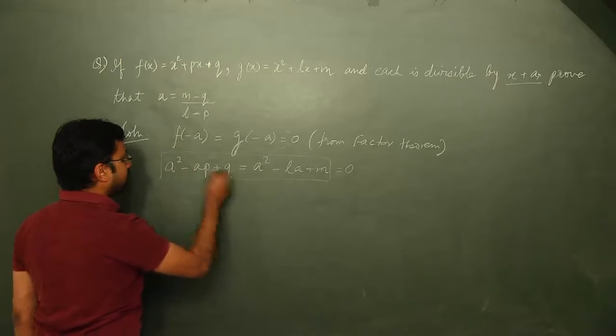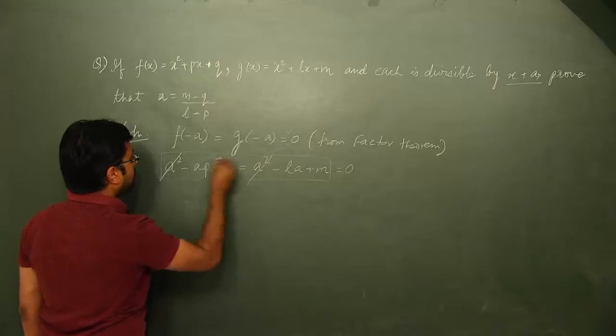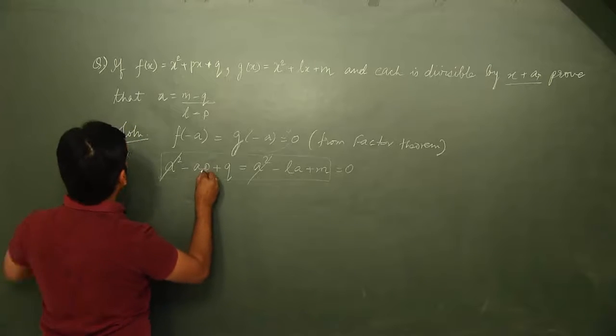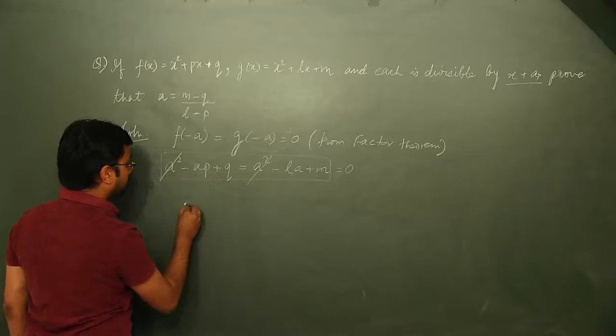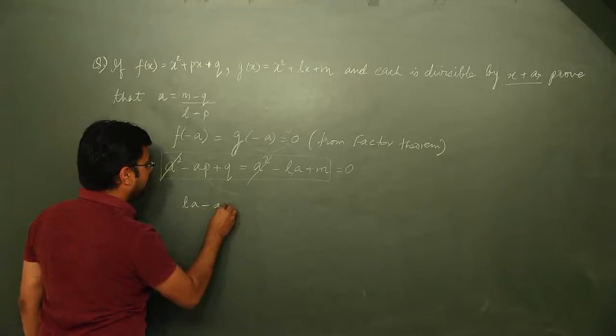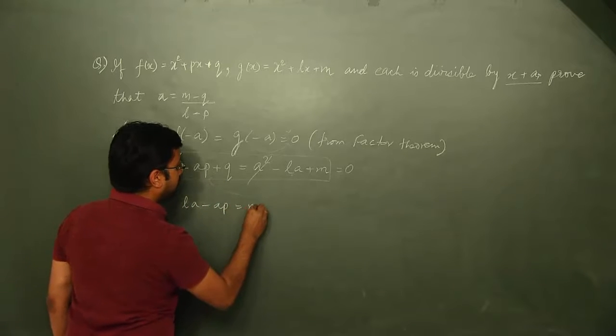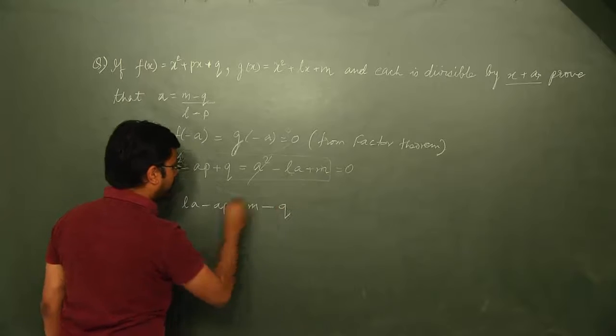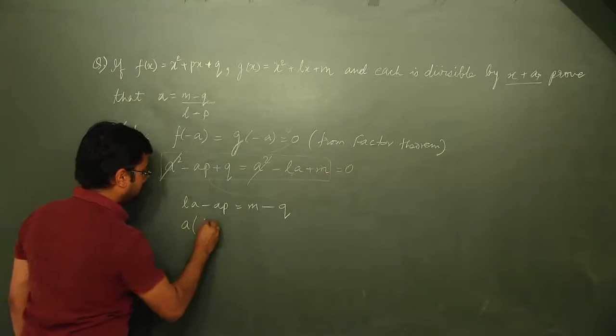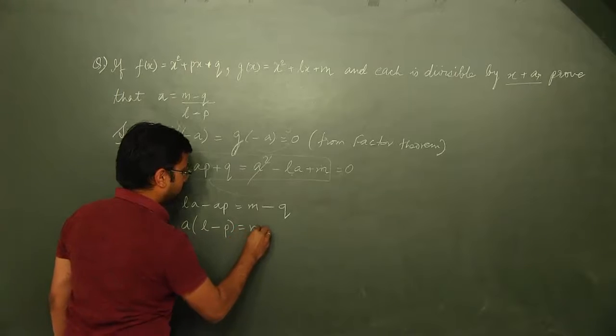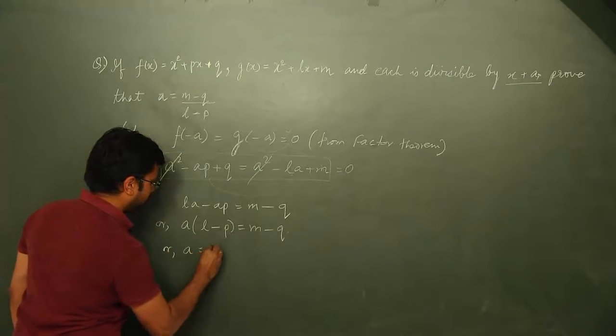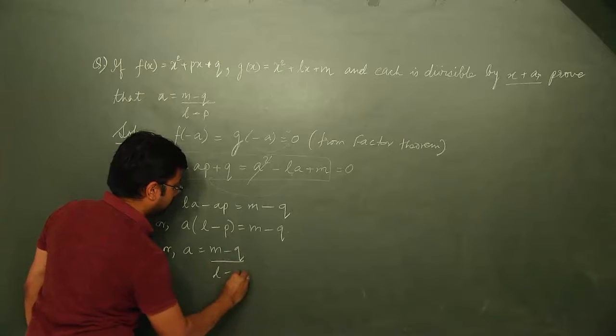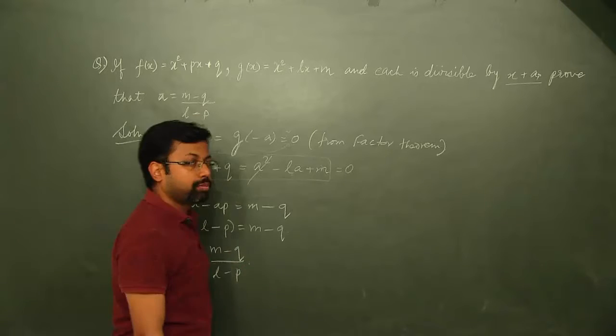If you take these two equations, a squared would cancel out. Take a to one side, so you get la minus ap, and m minus q goes to the other side. a is common here, so you have a times (l minus p) equals m minus q, or a equals m minus q divided by l minus p.